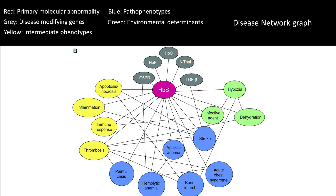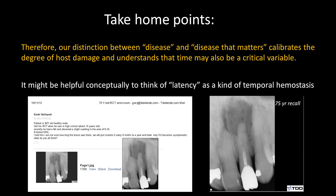Apical periodontitis must be thousands of times more complex than this simple disease. So when you're confronted with a case like one that Sashi posted a couple years ago on TDO, are you sure that our reductionist Cartesian disease model really gives you the guidance and decision capability to do the right thing for your patient? When I look at this case, what I see is that the smartest thing this patient did was not have the endodontics done. And our disease model informs that decision on every single patient that we have.